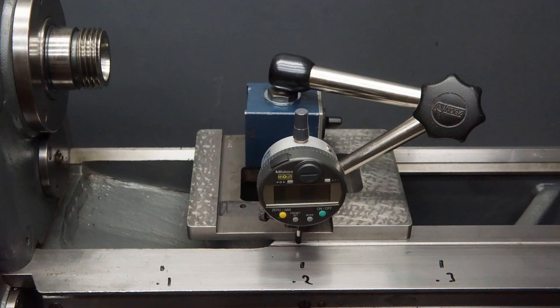A narrow strip of the tailstock way is not used and should not show any wear. Therefore it should be suitable for a reference.